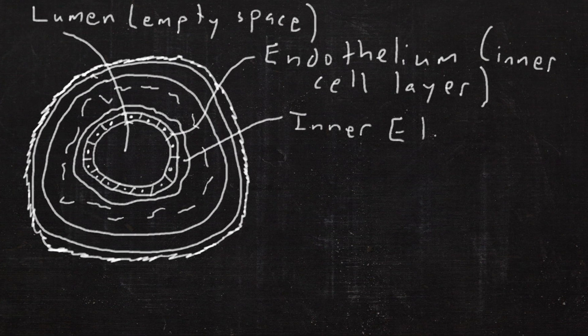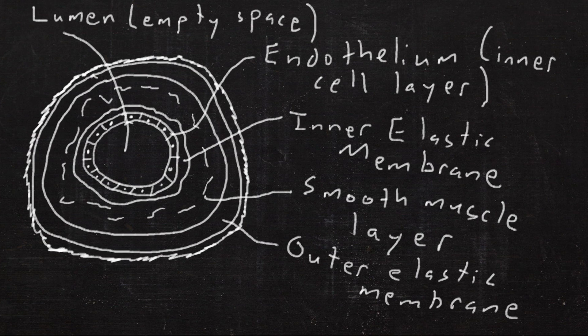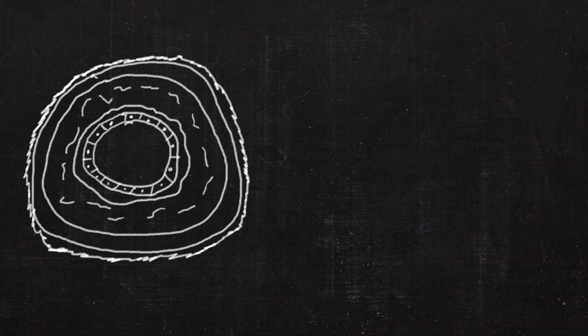Outside of that is the endothelium, which is the inner cell layer, then the inner elastic membrane, then a very thick smooth muscle layer, the outer elastic membrane, and the tunica adventitia, which is the outer jacket.